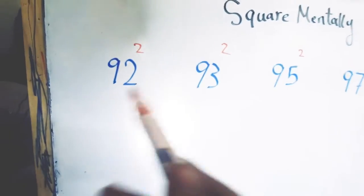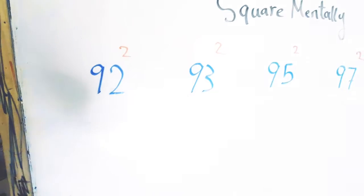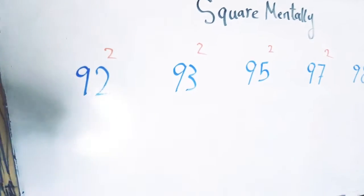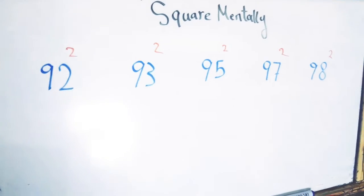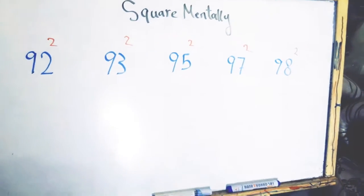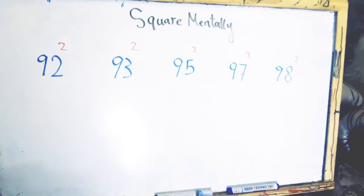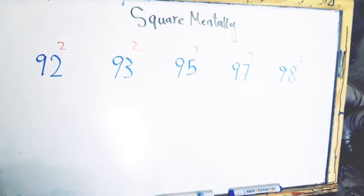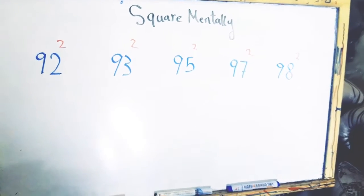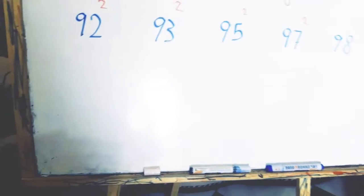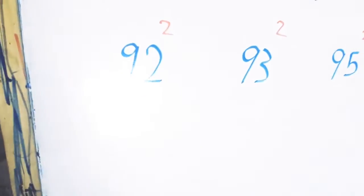When we want to square any of the numbers located between 90 and 100, we can do this mentally, in our mind without any difficulty at all. Let's look at the first example.